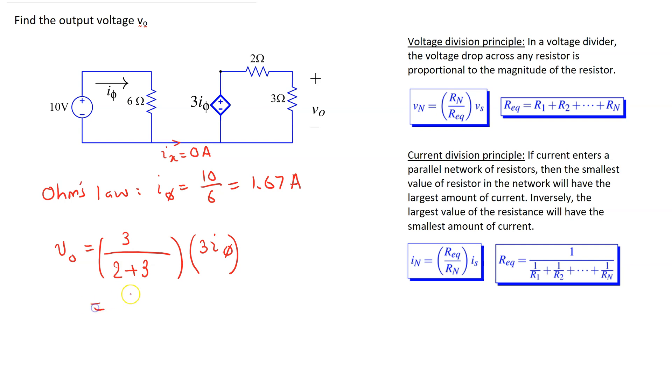This can be simplified as 9 over 5 I5, and substituting the value of I5, which is 10 over 6, this directly gives 3 volts, just as before. So this reconfirms the solution.